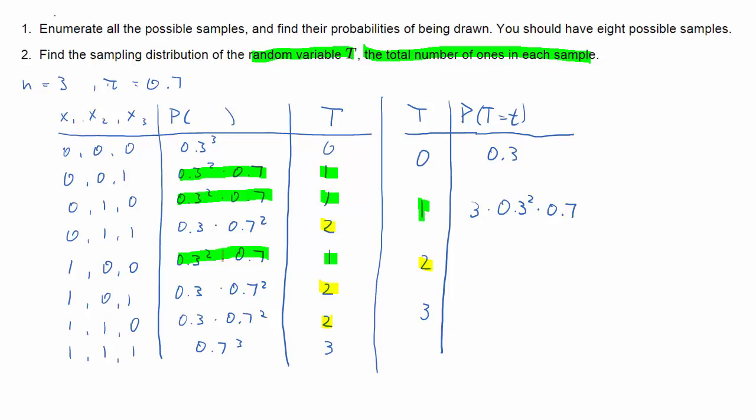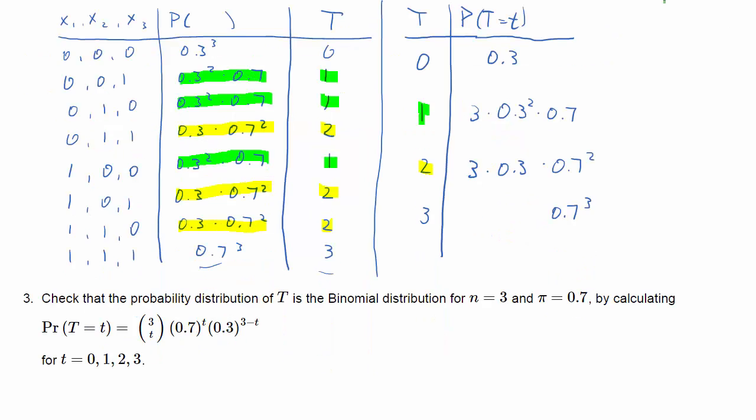Next, outcome 2. Again, we have 3 of our original sample outcomes that deliver that value. So it's 3 times, and each of them has the probability 0.3 times 0.7 to the power of 2. There's only one outcome that has 3 ones, and the probability of that is 0.7 to the power of 3. So these are our probabilities.